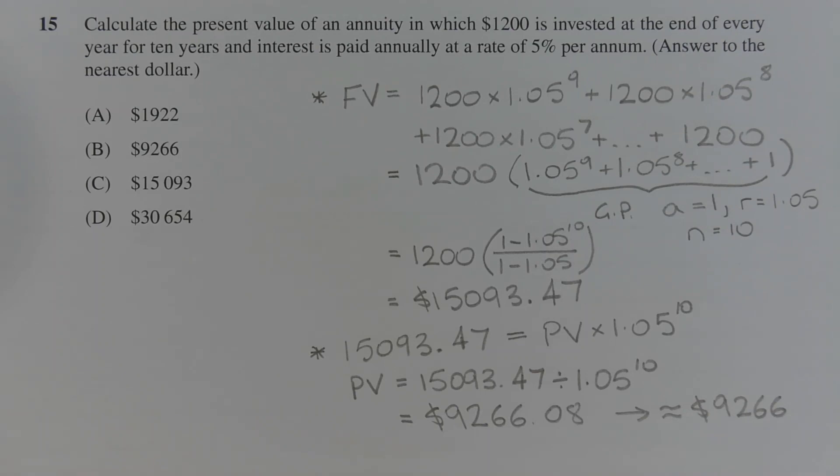So using the sum of a GP formula, we get future value is equal to 1,200 times (1 minus 1.05 to the power of 10) over (1 minus 1.05), and that equals $15,093.47.